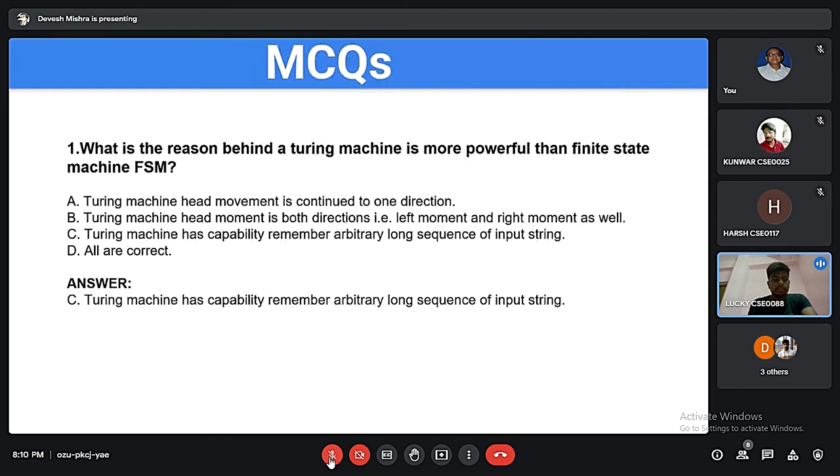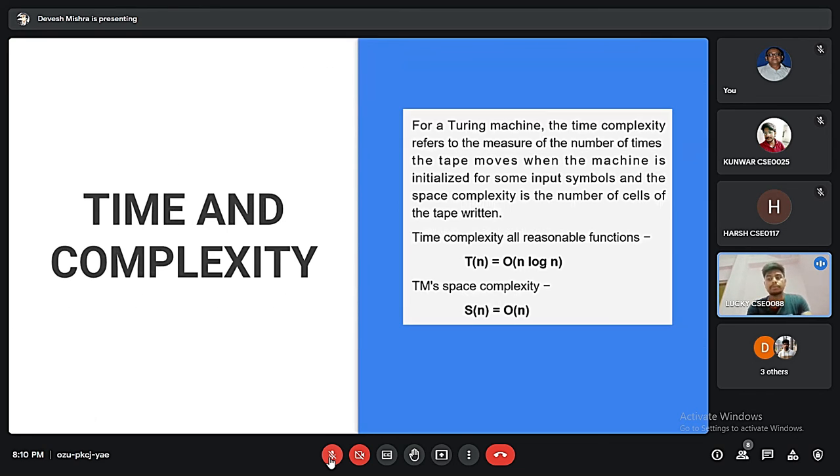For the Turing machine, the time complexity refers to the measure of number of times the tape moves when the machine is initialized for some input symbol, and space complexity is the number of cells of the tape written. The time complexity is given as big O of n log n and the space complexity is given as big O of n.